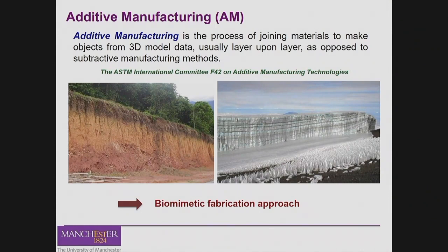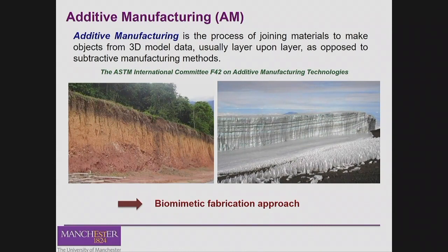The great advantage of additive manufacturing is that it is a biomimetic process — it follows very closely many processes we find in nature. One example is the layering of soil deposited layer by layer. Trees also follow a similar process — they can bend due to wind but then straighten up again because they can deposit layers of material that are denser in specific regions, forcing the tree to straighten. Additive manufacturing processes are derived from processes we find almost every day in nature.